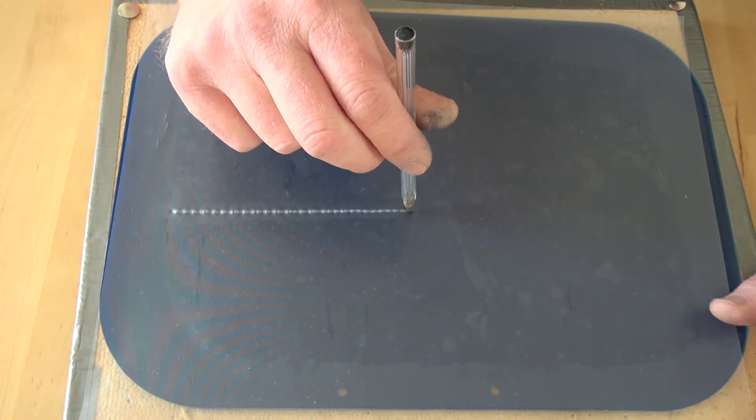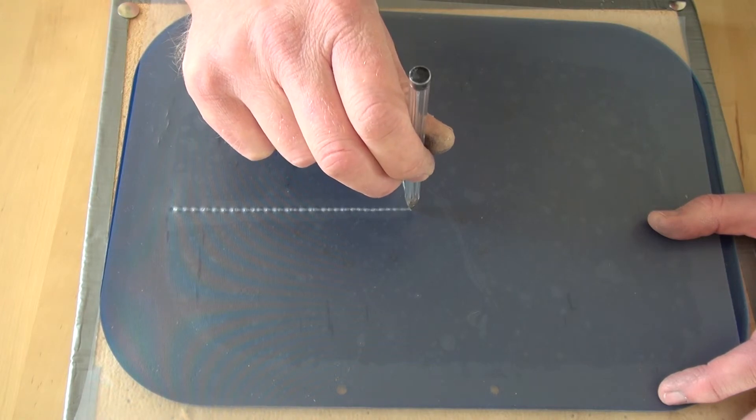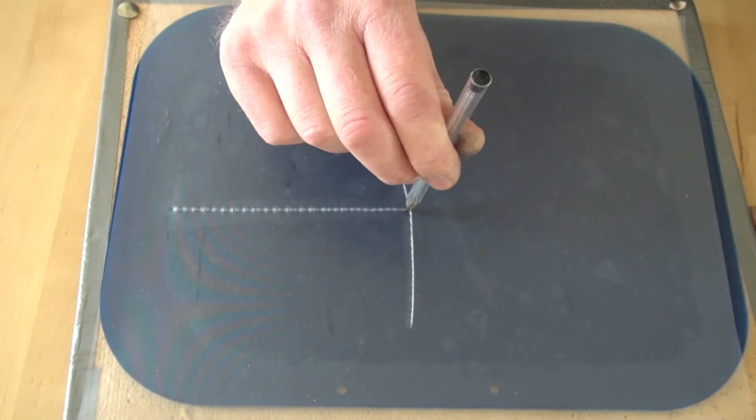If you want to draw towards you, lean the pen towards you and draw. If you want to draw away from yourself, lean the pen away slightly and draw. And equally to the left.